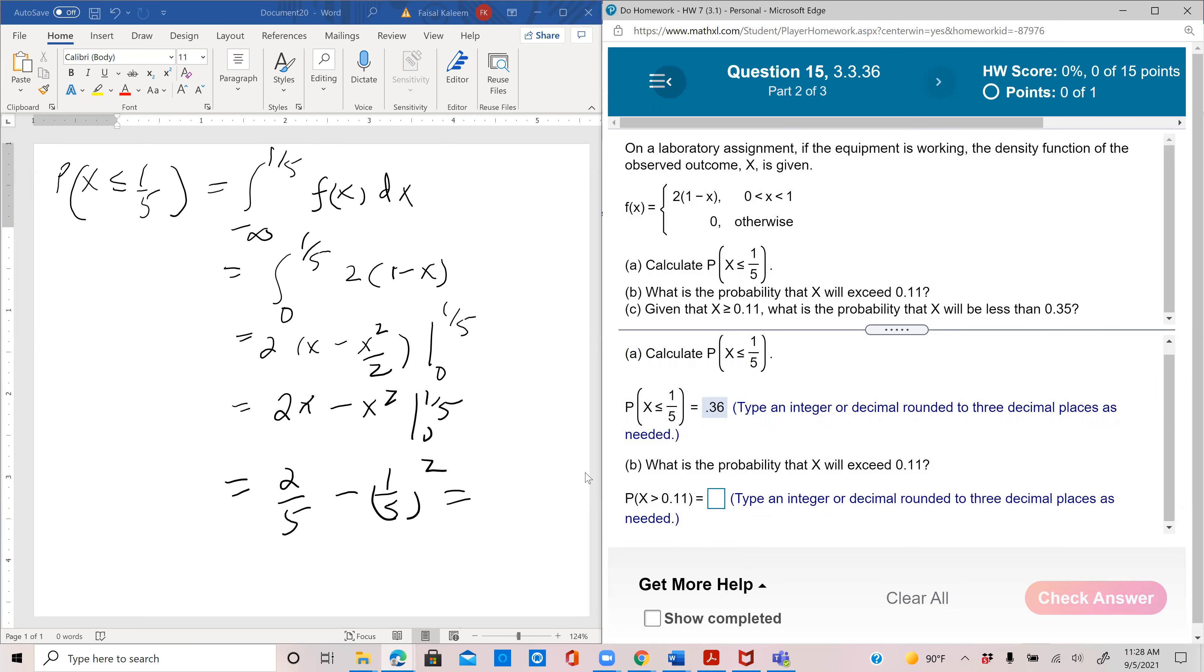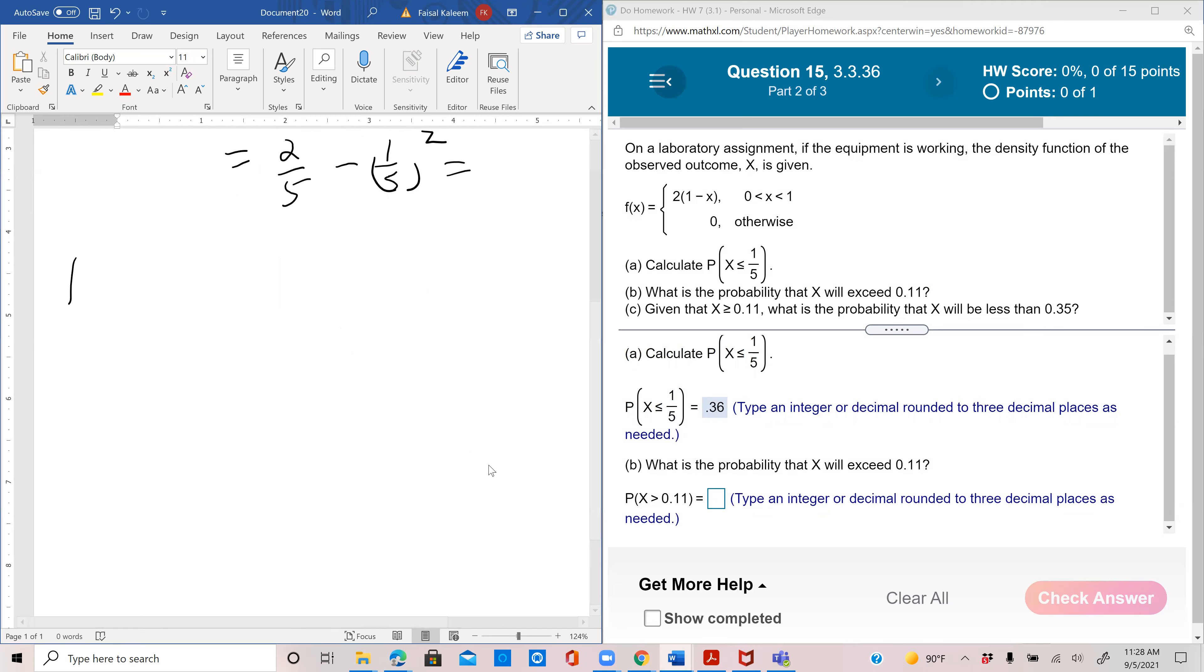What's the probability that x will exceed 0.11? So probability x is greater than 0.11. Now you would do 0.11 to infinity, f(x).